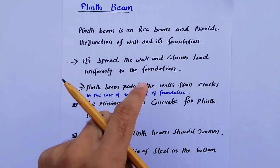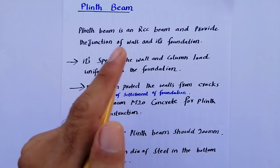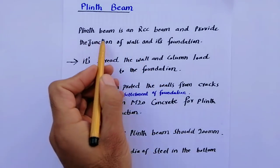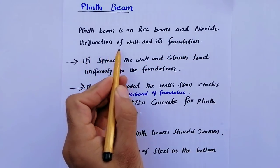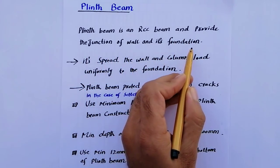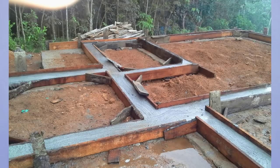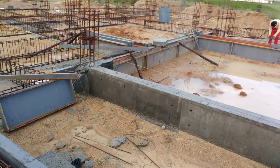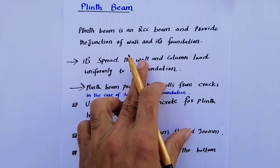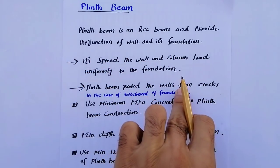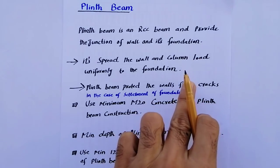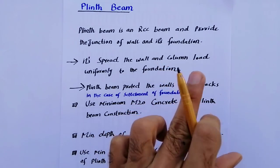So what is plinth beam in building construction? Plinth beam is an RCC beam provided at the junction of the wall and its foundation. As you can see in this picture, plinth beam spreads the wall and column load uniformly to the foundation. This is the main reason why we provide plinth beam in building construction.